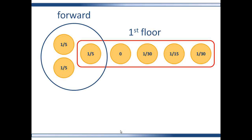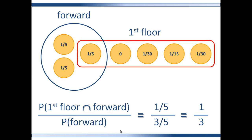In this case, the intersection between lavender and first floor dweller is one patient with one-fifth probability of being sampled. The conditional set — which is the set of forward patients — contains three patients, each with one-fifth probability. So the numerator is one-fifth and the denominator is three-fifths, and the result is one-third.